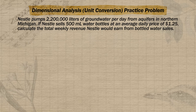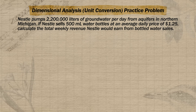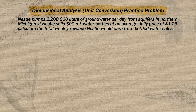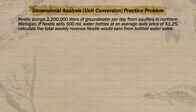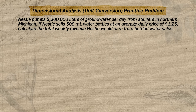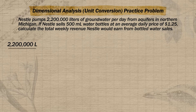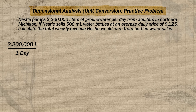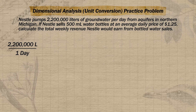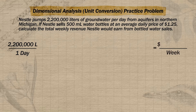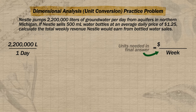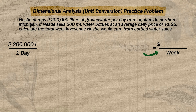For background: Nestlé is pumping 2,200,000 liters of groundwater per day from aquifers in Michigan and selling 500-milliliter water bottles at an average price of $1.25. We need to calculate the total weekly revenue from these water bottle sales. The first step is to identify our starting units — 2,200,000 liters per day — and write those out. Then on the far right, write the units our answer needs to be in: dollars per week. This reminds us when we're done with the unit conversion.